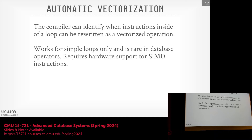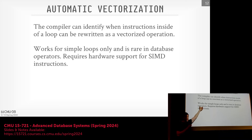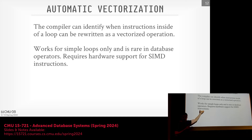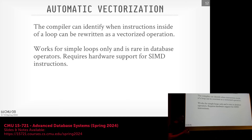Automatic vectorization: the compiler can identify when instructions inside a tight loop could be rewritten as vectorized instructions. This only works for simple loops, and in database systems it doesn't always pan out. GCC, Clang, and ICC have gotten better at this. If you compile on a laptop without AVX512, that binary won't use AVX512 even on a Xeon server that supports it — you have to be mindful of where you compile.